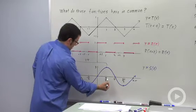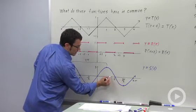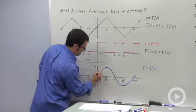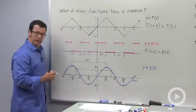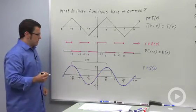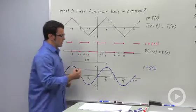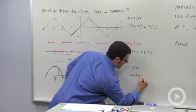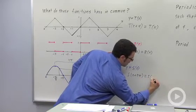If I start in between negative 3 pi over 2 and negative pi, if I add 2 pi to that, I'll be right in between pi over 2 and pi. Do I get the same value? It looks like I do. So this value looks like it works. 2 pi. S of x plus 2 pi equals S of x.